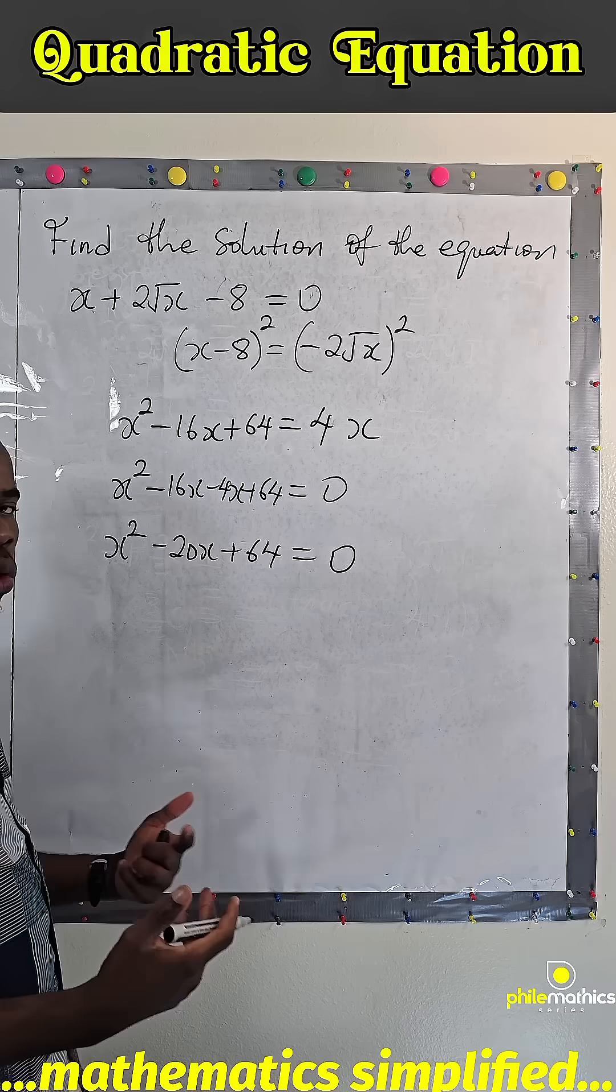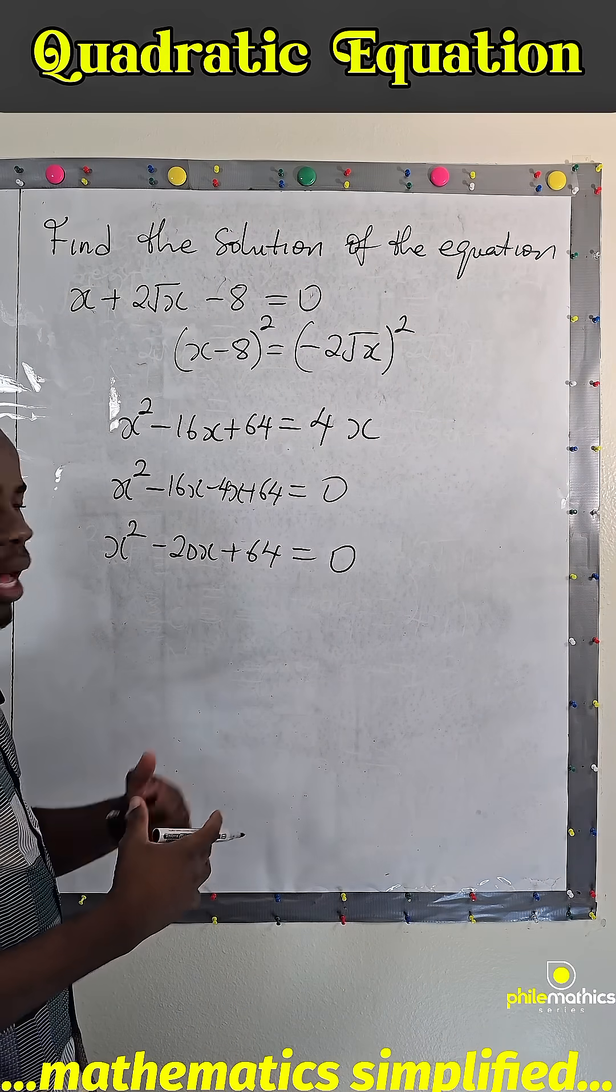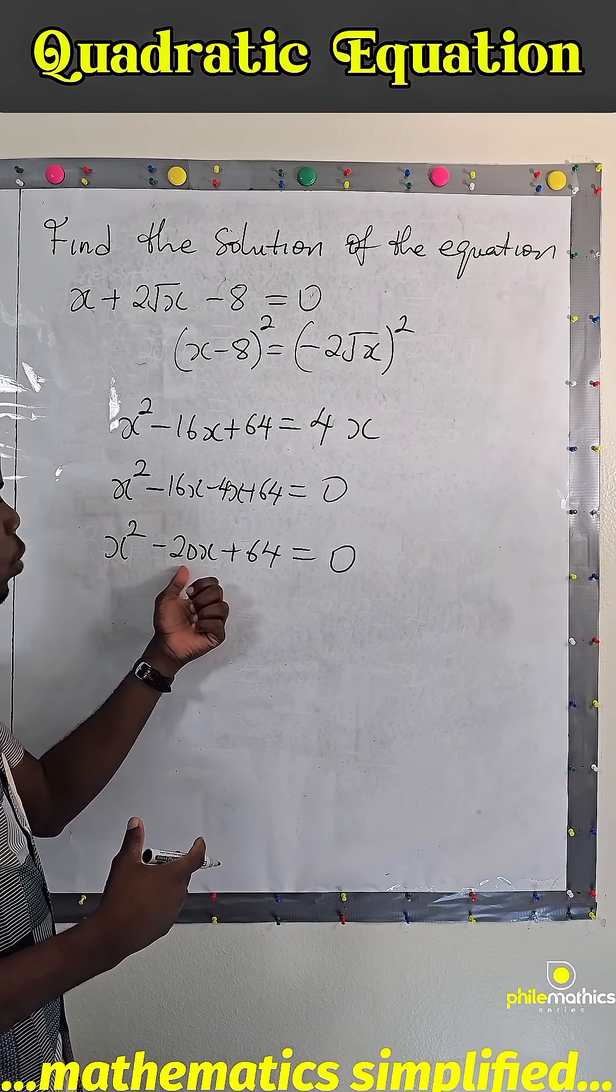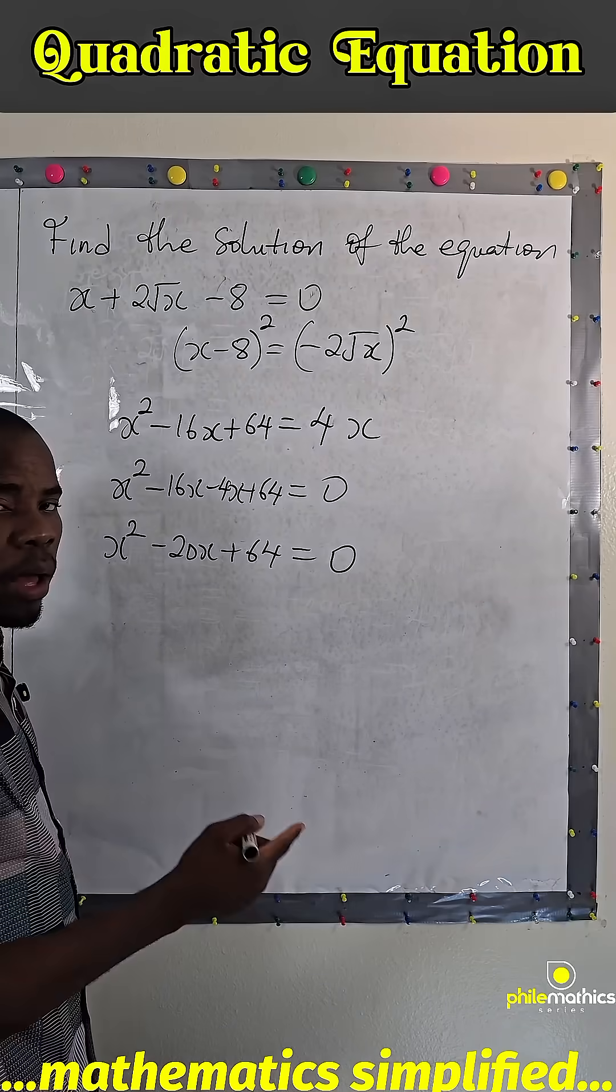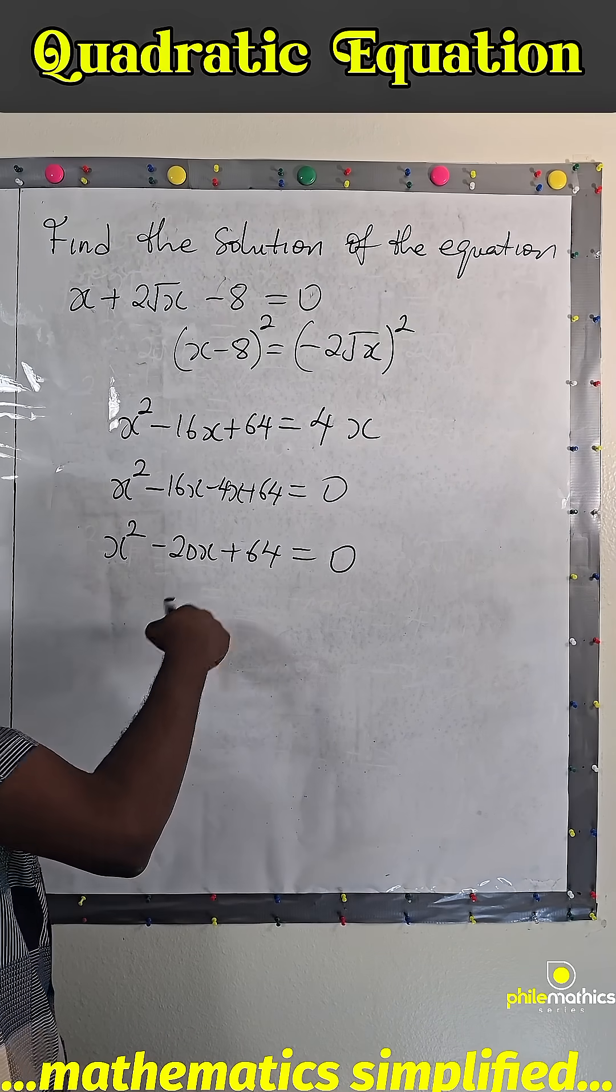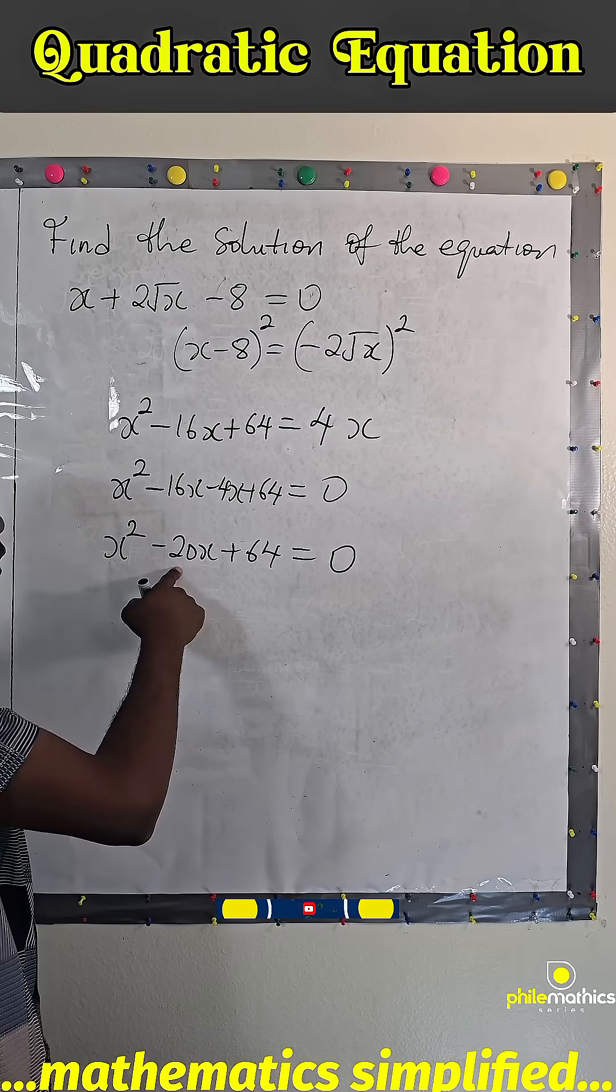Look for two numbers such that when you multiply them you get 64 and when you add them you get minus 20x. Those numbers will be minus 4 and minus 16 because minus 4 times minus 16 is 64 and minus 4 minus 16 is minus 20.